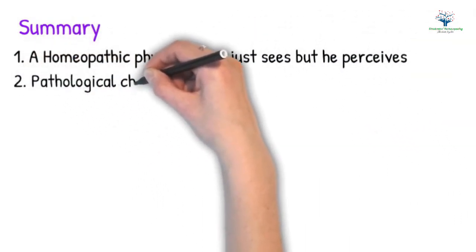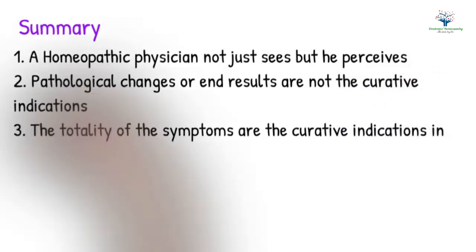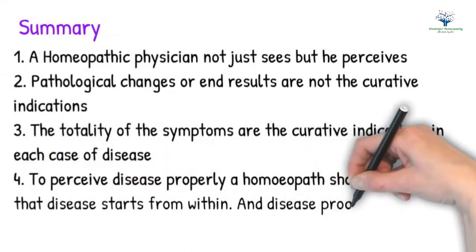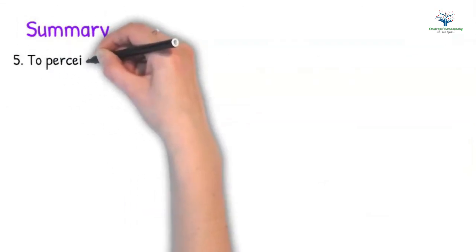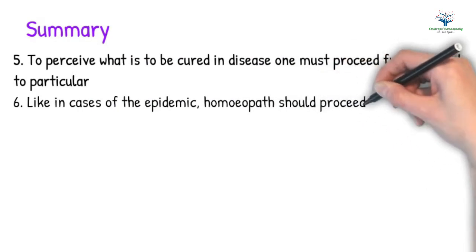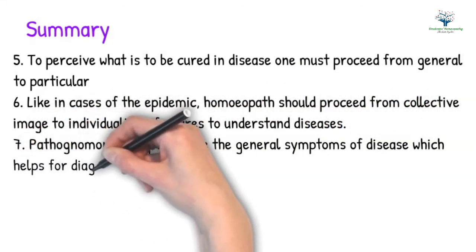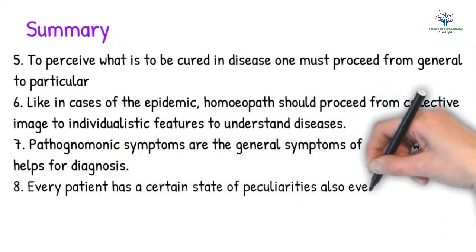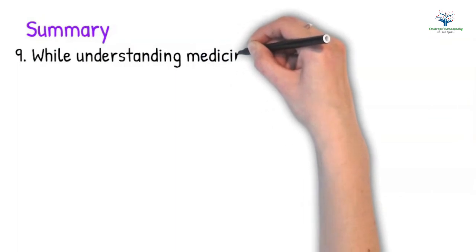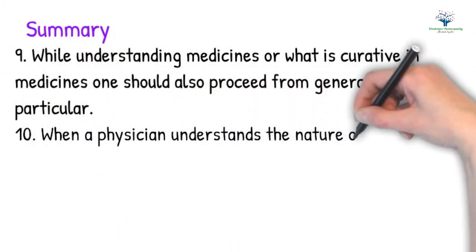Summarizing: A homeopathic physician not just sees but perceives. Pathological changes or end results are not the curative indications — the totality of symptoms is the curative indication in each case of disease. Disease starts from within and progresses from center to circumference. To perceive what is to be cured, one must proceed from general to particular. Pathognomonic symptoms are the general symptoms helping diagnosis; every patient has peculiarities and every remedy has peculiarities — only in this way can the remedy fit the patient. While understanding medicine, one should also proceed from general to particular, and when a physician understands the nature of disease and remedies, he becomes skillful.